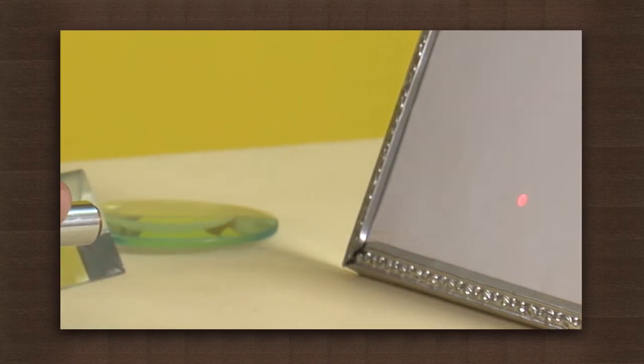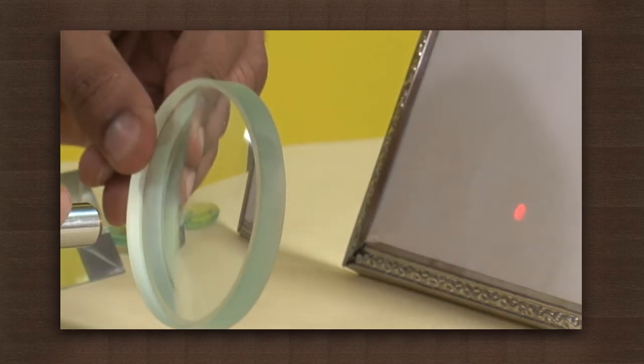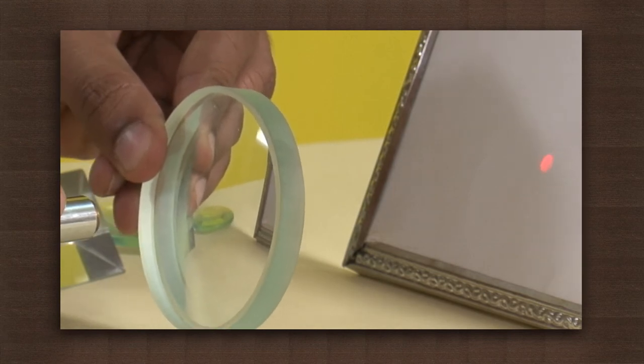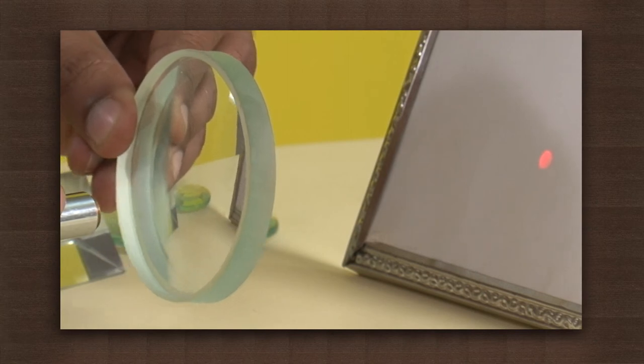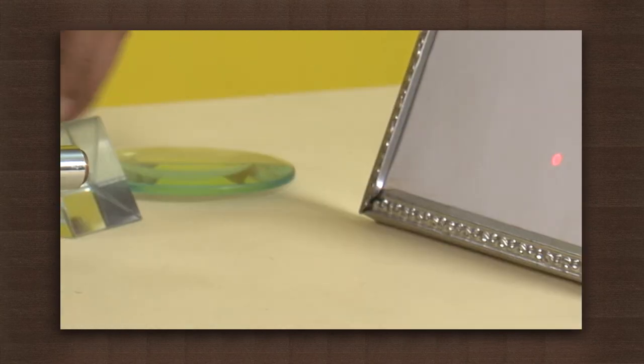Now we will obstruct the path of the beam with a concave lens. We observe that the point becomes bigger and more diffused, but the position still remains the same. This happened because concave lenses diverge light rays.